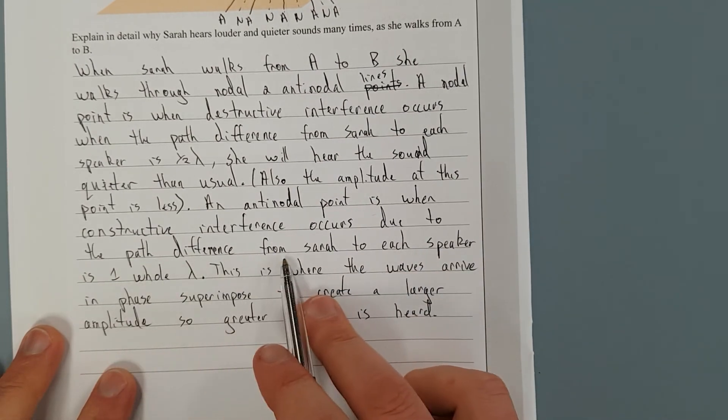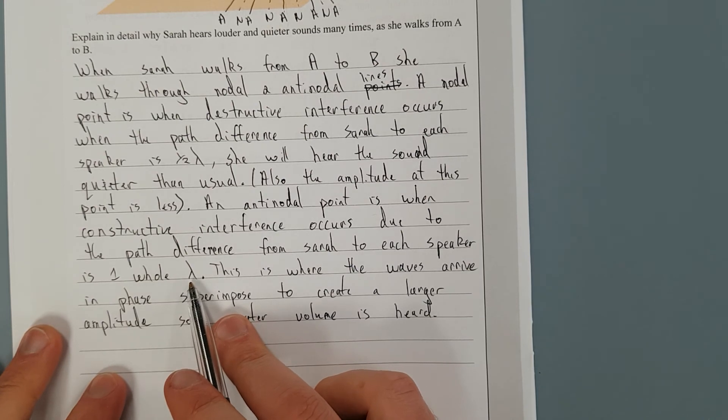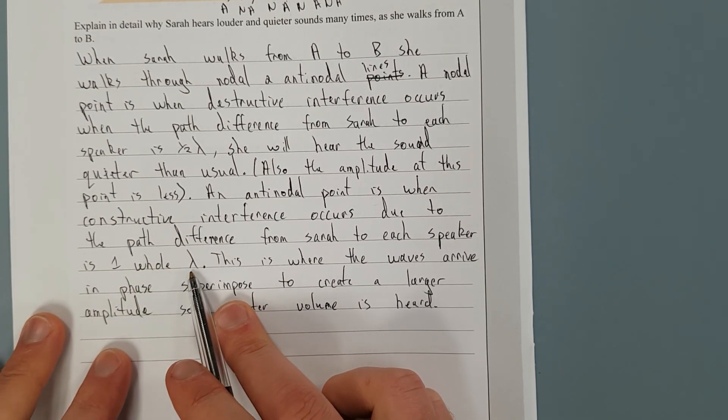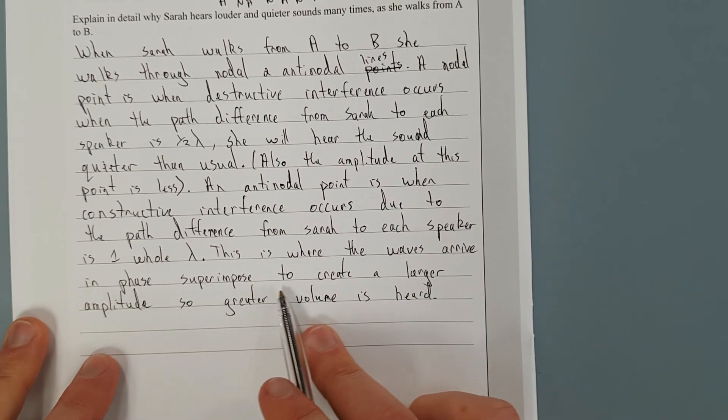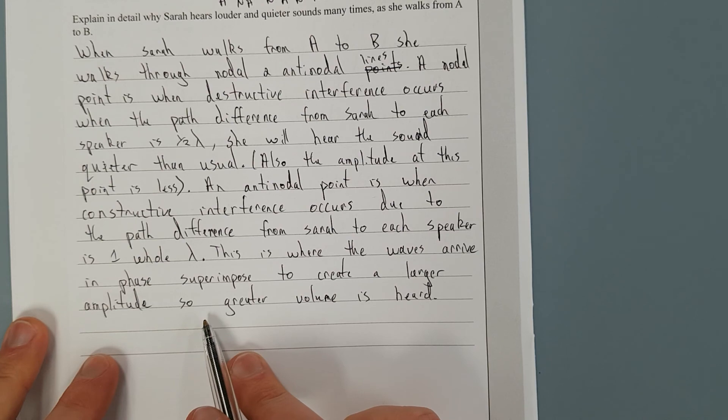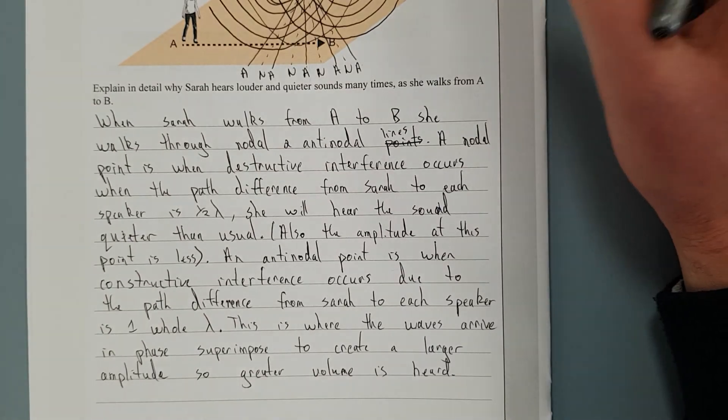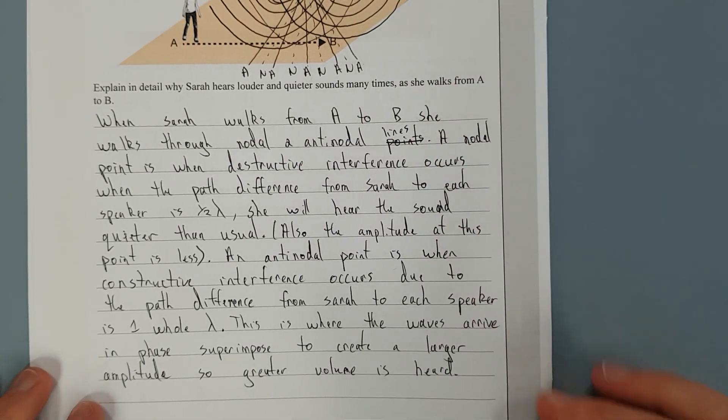An anti-nodal point is when constructive interference occurs due to the path difference from Sarah to each speaker being one whole wavelength. I appreciate I worded it differently, but whatever. You get the point. One whole wavelength, that means they're in phase. So this is where the waves arrive in phase, superimposed to create a larger amplitude. So greater volume is heard. Don't try and memorize this, but they ask this question every year in exams and it's the same answer.